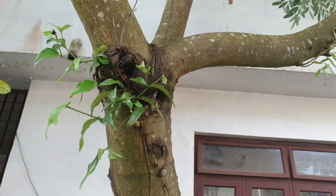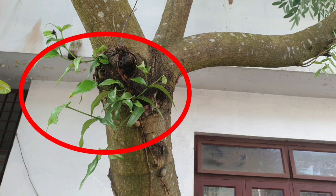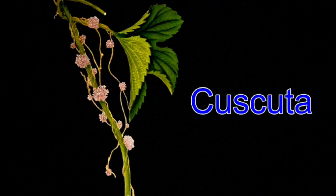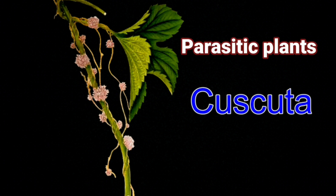Children, have you heard about parasitic plants? Some plants do not grow in the soil, so they cannot make food or absorb water from the soil. They grow on other plants and take in food and water from the stem of these plants. Such plants are called parasitic plants.